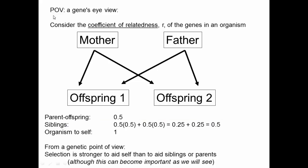The most useful point of view when thinking about intergenerational conflict is the viewpoint of a gene. We know that different genes are in different individuals, but different individuals can have copies of the exact same allele. For example, let's think about two offspring that share the same mother and father, and consider the coefficient of relatedness of the genes. For an allele in an offspring, what is the probability that it is in a particular parent? 0.5 — if you pick an allele in the offspring, there's a 50% chance it's in the mother.